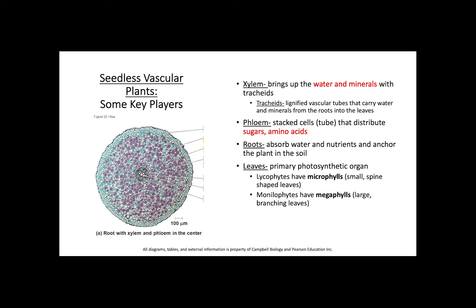Water is brought up from the roots, while sugars and amino acids move down from the leaves where photosynthesis occurs. The roots absorb water and nutrients and anchor the plant in the soil. The leaves are the primary photosynthetic organ. Lycophytes have microphylls — small, spine-shaped leaves — whereas monilophytes have megaphylls, which are large branching leaves.